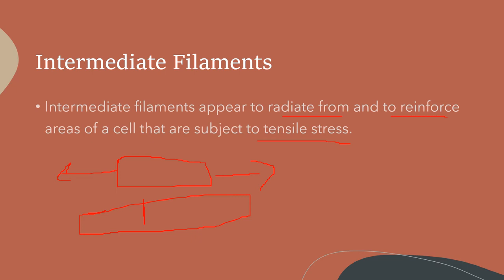The force that acts per unit area of the cell is known as the tensile stress. So intermediate filaments appear to radiate from and to reinforce areas of the cell that are subject to this tensile stress that causes the stretching of the cell.